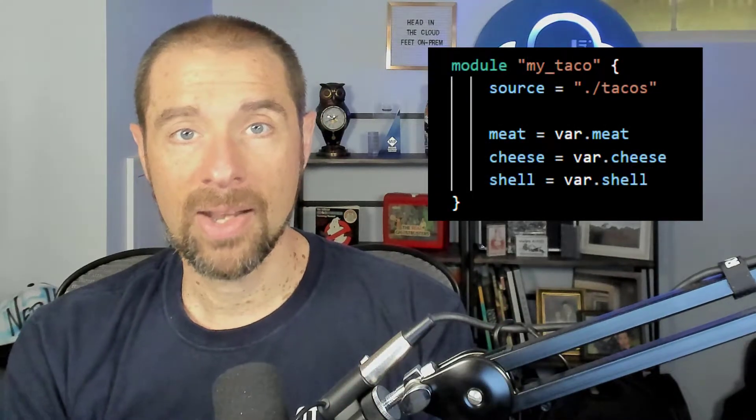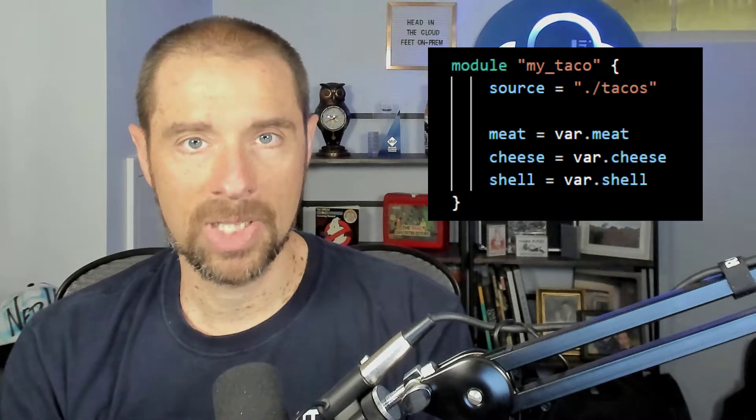A root module implies that there could be child modules. Child modules are when you invoke a module from within the configuration in your Terraform files by using the module keyword and then whatever syntax you need to invoke that particular module. A child module can itself call another child module, and you can have this nested module thing going down several layers. I wouldn't recommend going too many layers deep on that, but be aware that if you're using a module someone else wrote, it may also be pulling in other modules.